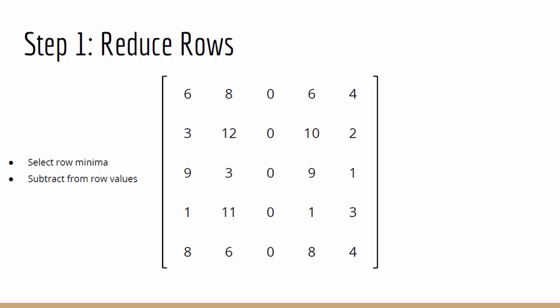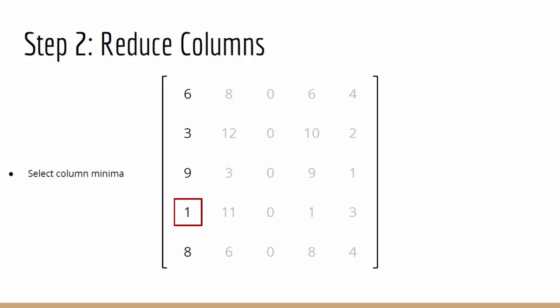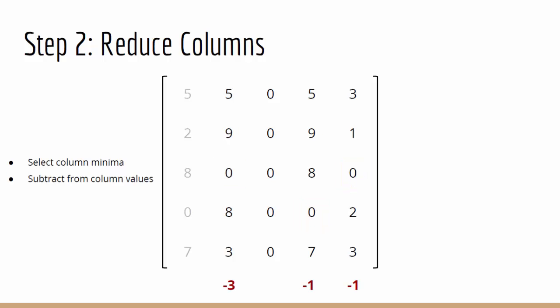Step 2 is to reduce the columns, much in the same way we just reduced the rows. Consider the first column. One is the smallest column value, so we subtract 1 from all of the other column values, leaving us with this new column. We do the same for every column, subtracting the smallest value in that column from every element in that column. This leaves us with this new updated matrix.